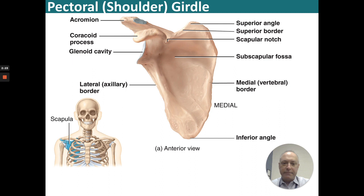Here is the scapula again, showing the subscapular fossa, the medial or vertebral border, and the lateral or axillary border. There is also an inferior angle. Up at the top, there's a superior angle, superior border, and a scapular notch, as well as the acromion, the coracoid process, and the glenoid cavity.